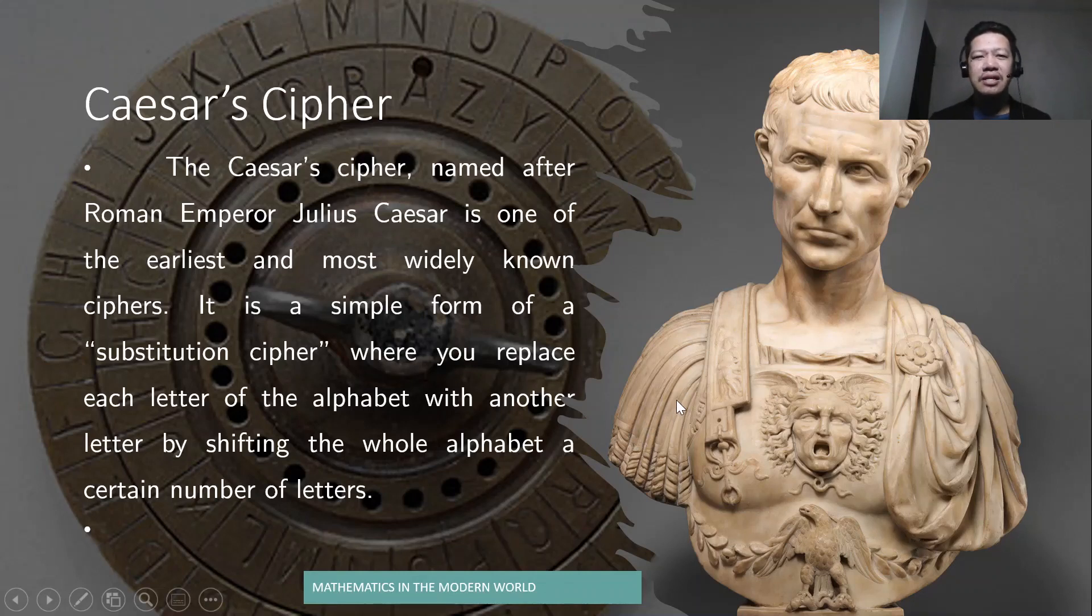One of the famous ciphers is that of Julius Caesar, and we call it the Caesar's cipher. So, it's named after the Roman emperor Julius Caesar. It is a simple form of a substitution cipher where you can replace each letter of the alphabet with another letter by shifting the whole alphabet a certain number of letters. And I think it's actually 3, 3 is the number of movements or shifts.